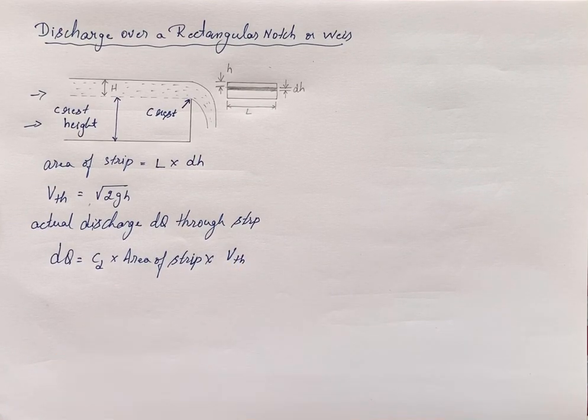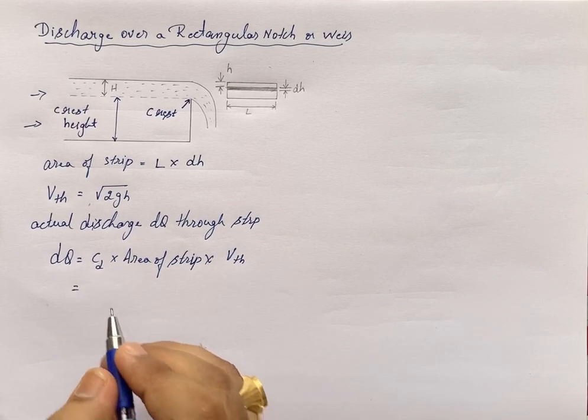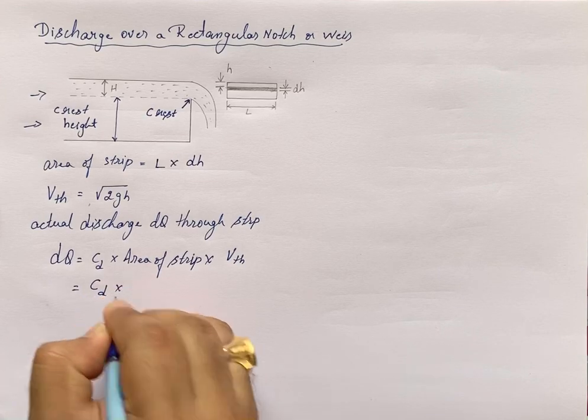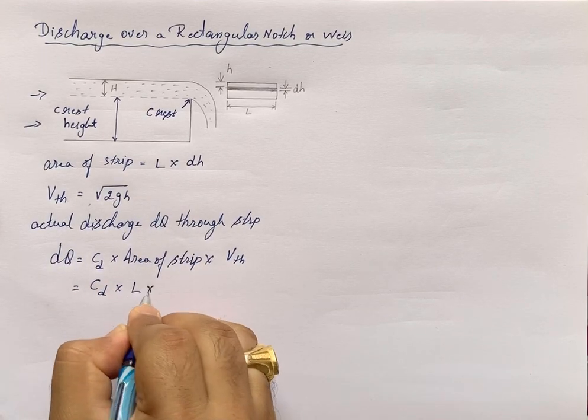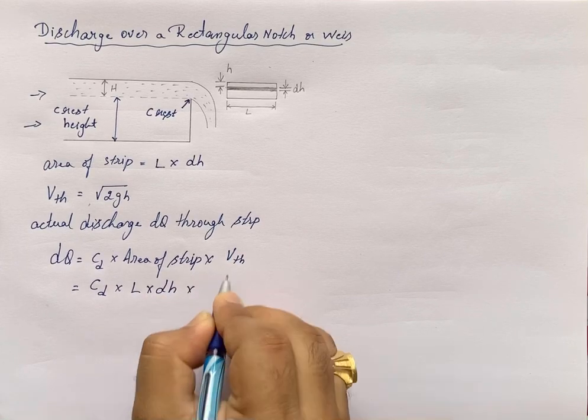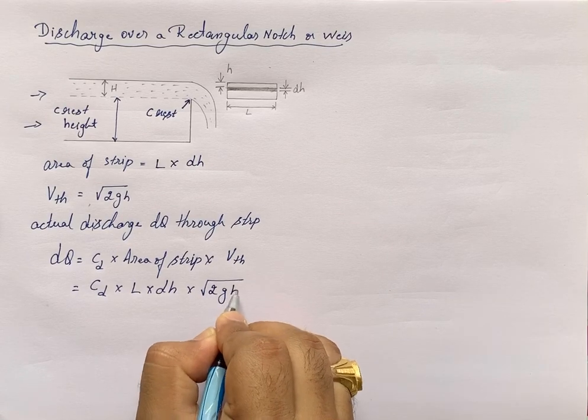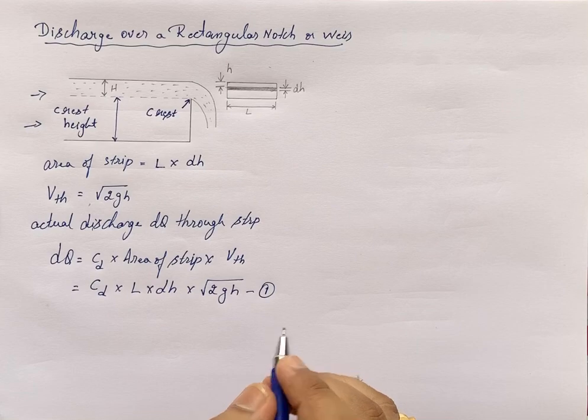This we have discussed in previous lecture videos. That is Cd times area of strip, which is L × dH, times theoretical velocity, which is √(2gH). Call this equation number 1.